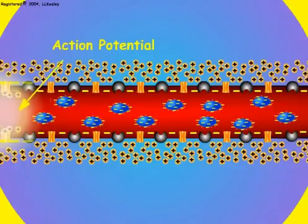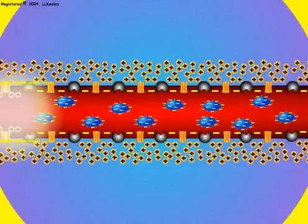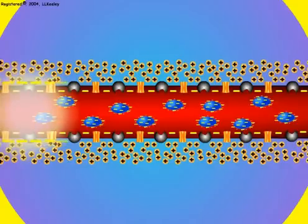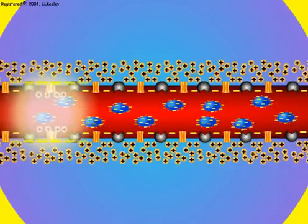Opening the sodium channels allows positive sodium ions to flow into the axon along their concentration gradient. In the region of the action potential, the outside of the membrane becomes negative and the inside becomes positive.